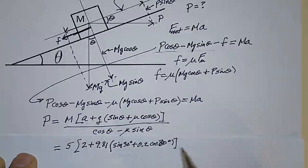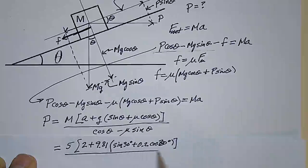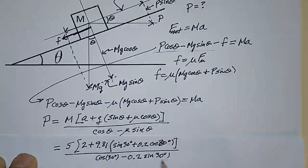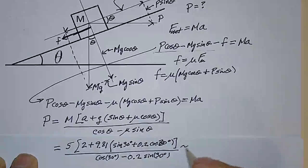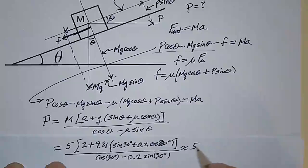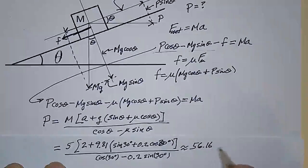And all of that is divided by cosine 30 degrees, minus mu, which is 0.2, times the sine of 30 degrees. And that works out to be 56.16 newtons, approximately.